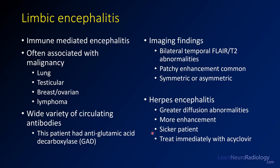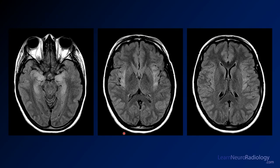The patients with herpes tend to be sicker, but it's very important that you treat them immediately with acyclovir until herpes can be excluded. In this case, looking at the FLAIR images, the medial temporal lobes and hippocampi are too bright bilaterally, and this abnormality extends up into the insula and subcortical white matter, bilaterally and relatively symmetrically.